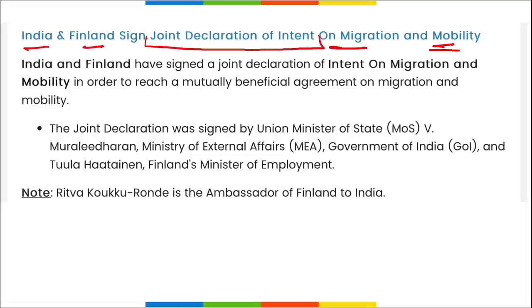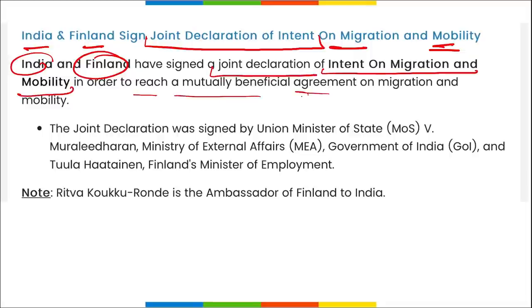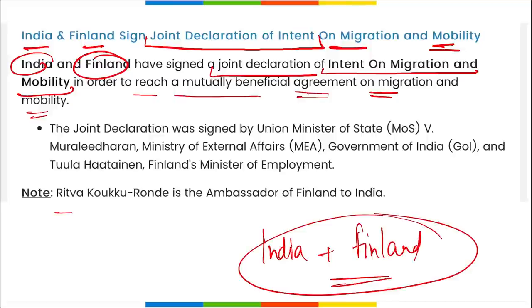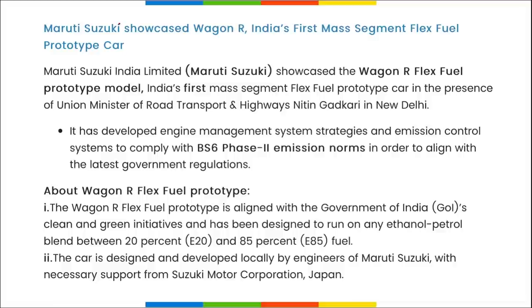India and Finland recently signed a Joint Declaration of Intent on Migration and Mobility to reach a mutually beneficial agreement. If a question is asked about which two countries signed this declaration on migration and mobility, the answer is India and Finland. Ritva Koukku-Ronde is the current Ambassador of Finland to India.